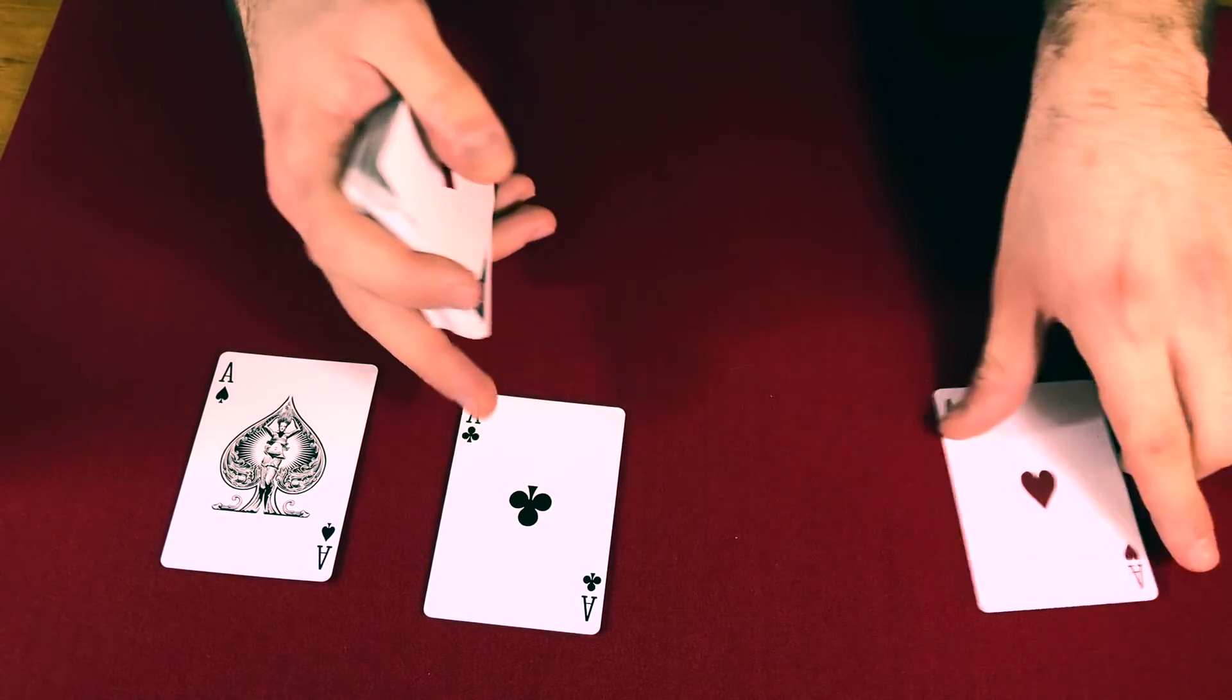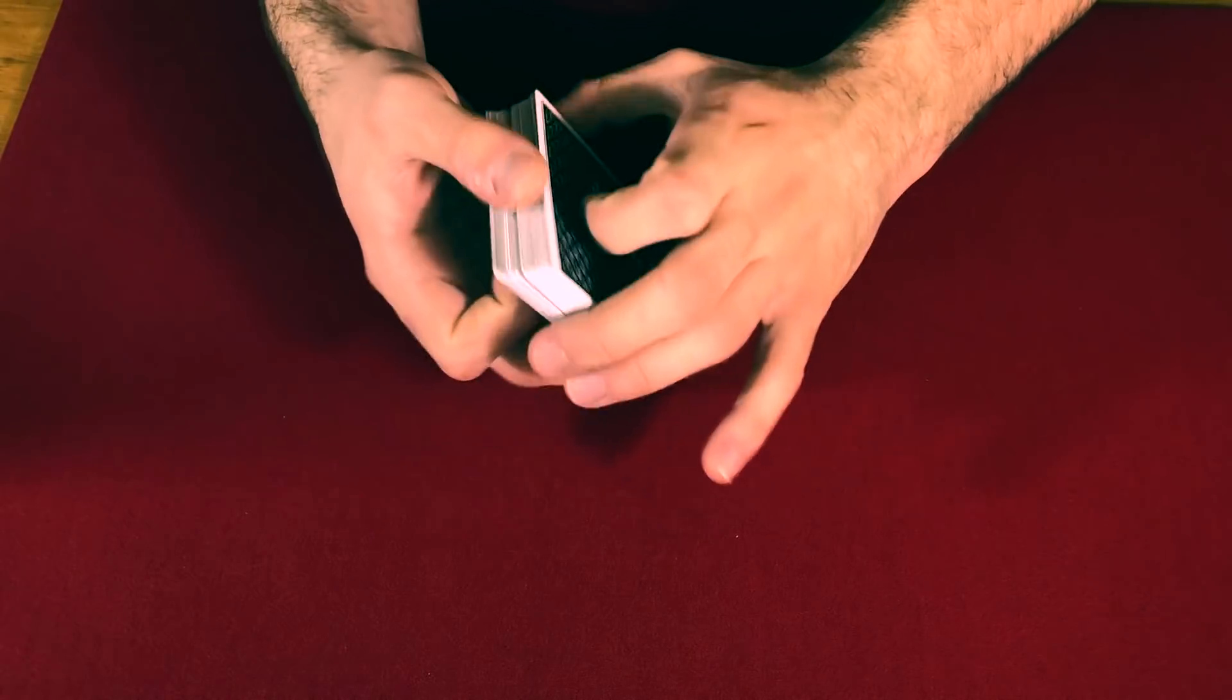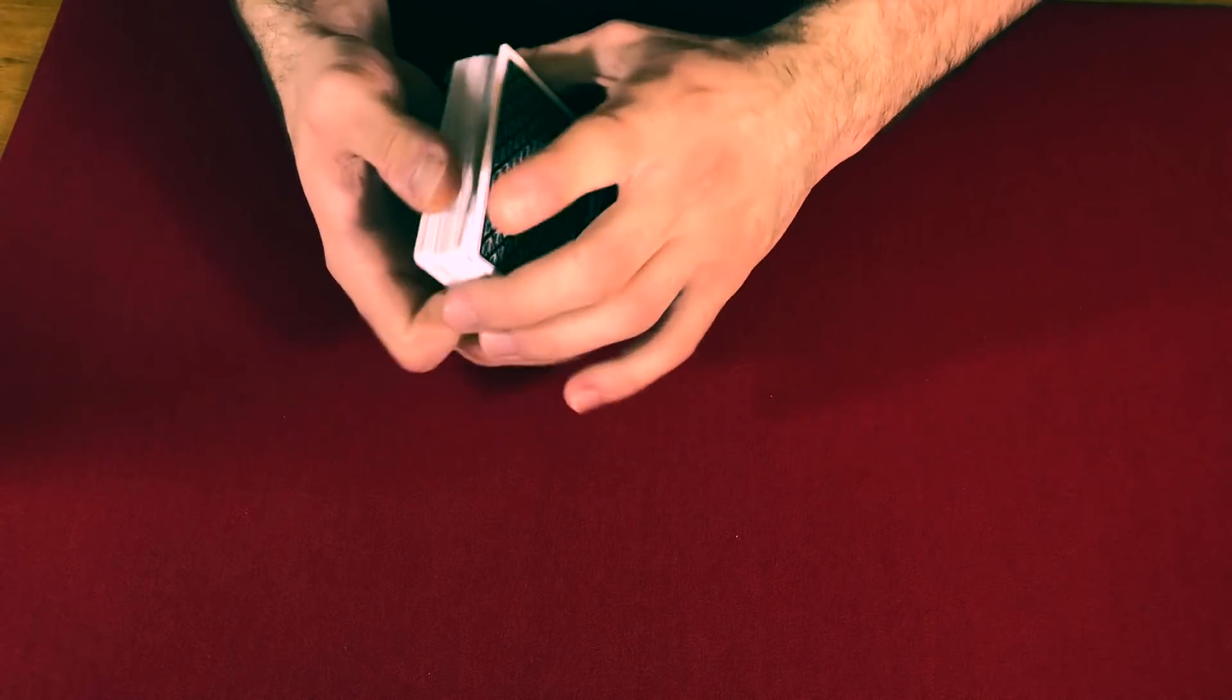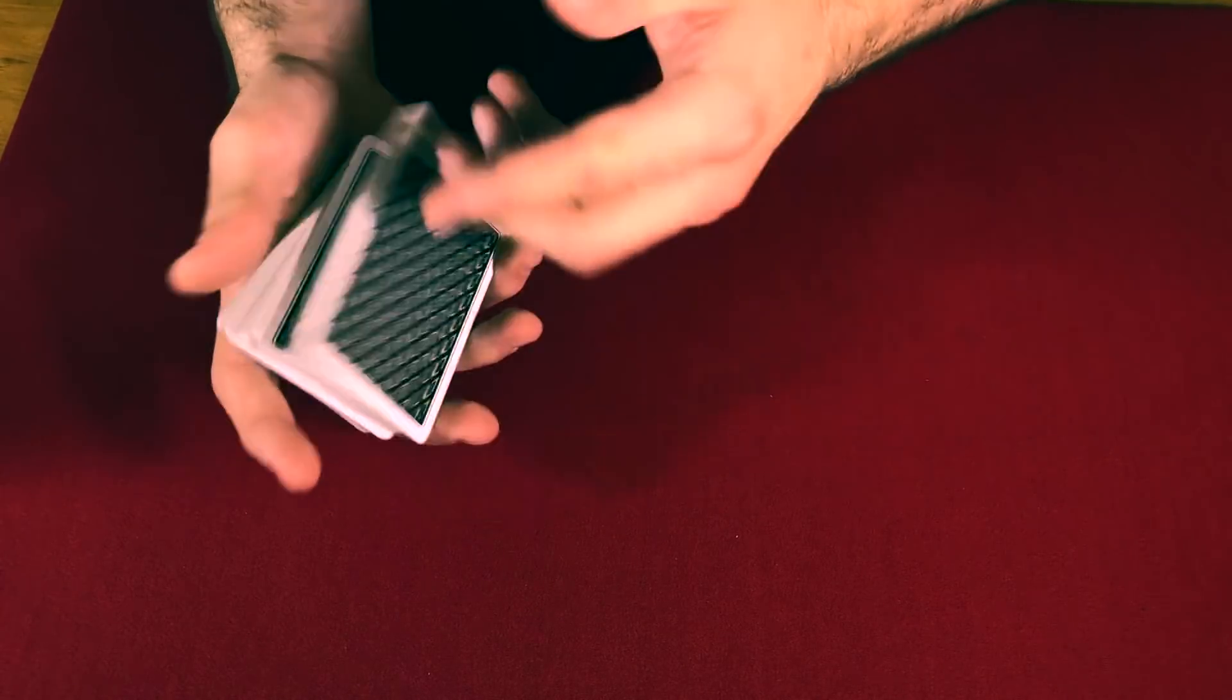So take any Ace, put it face up. The other three, they go face down, directly above them. Now, how does this one work so fluid and so well? Well, because you have to be a good talker. Very, very simple.